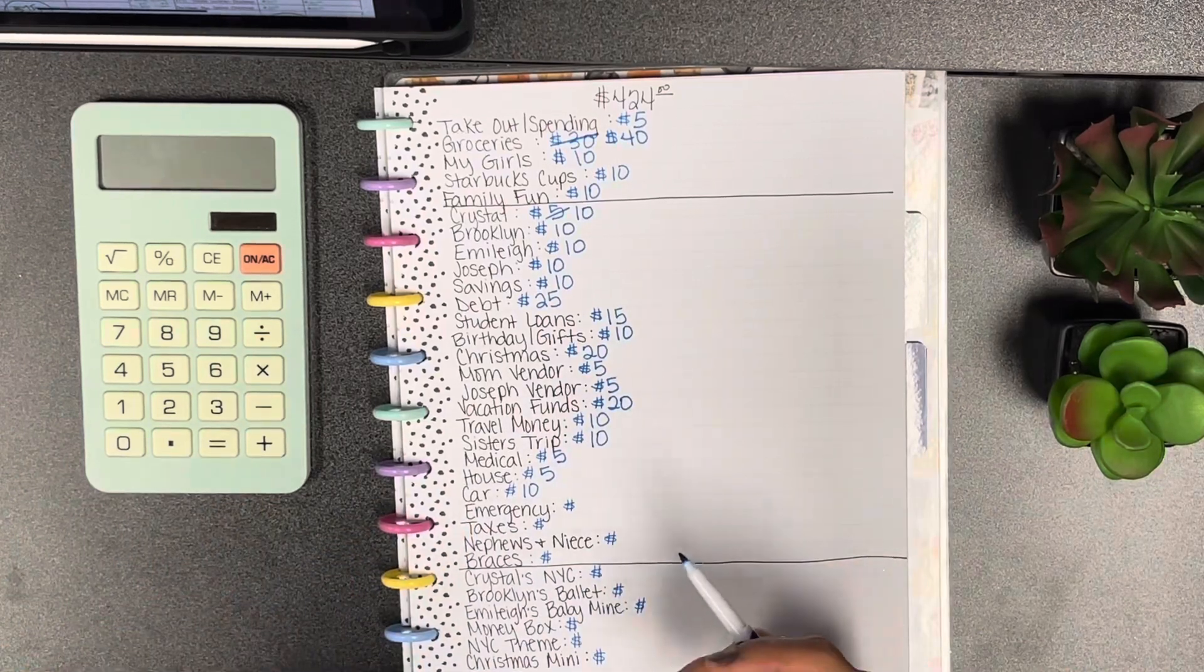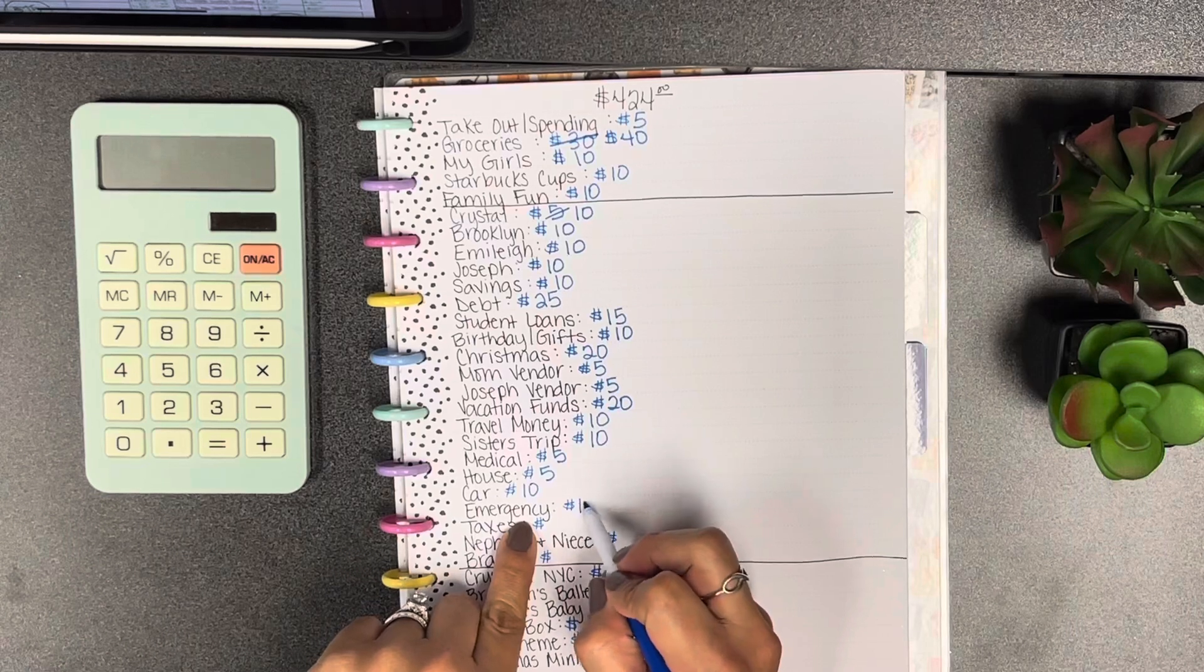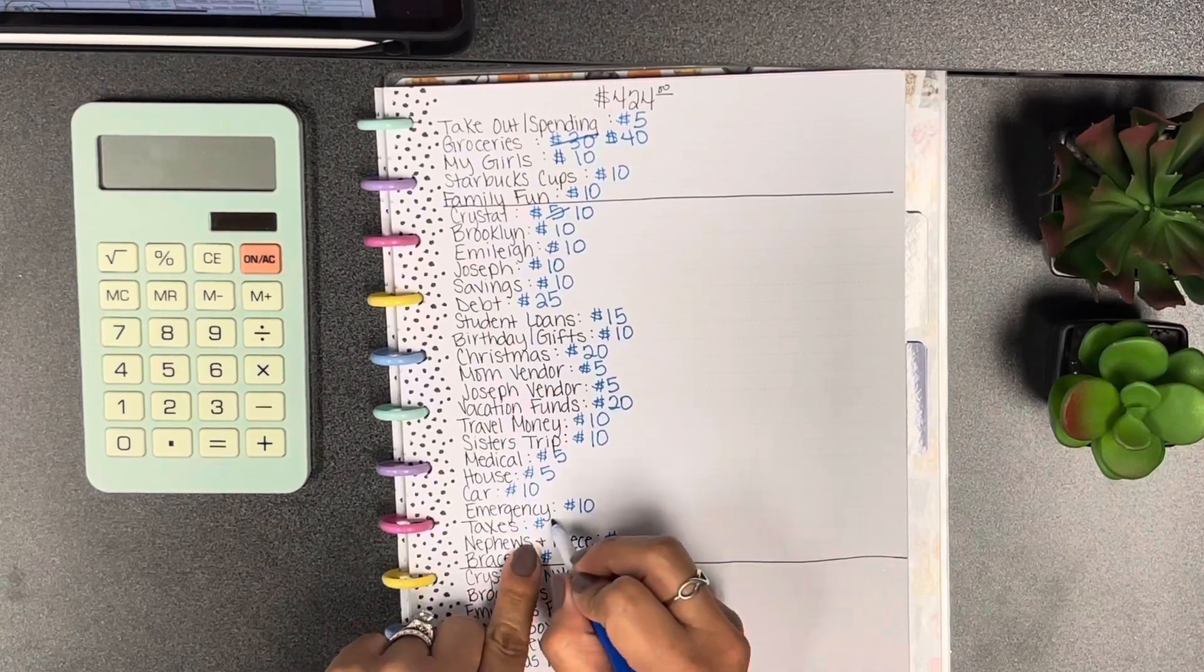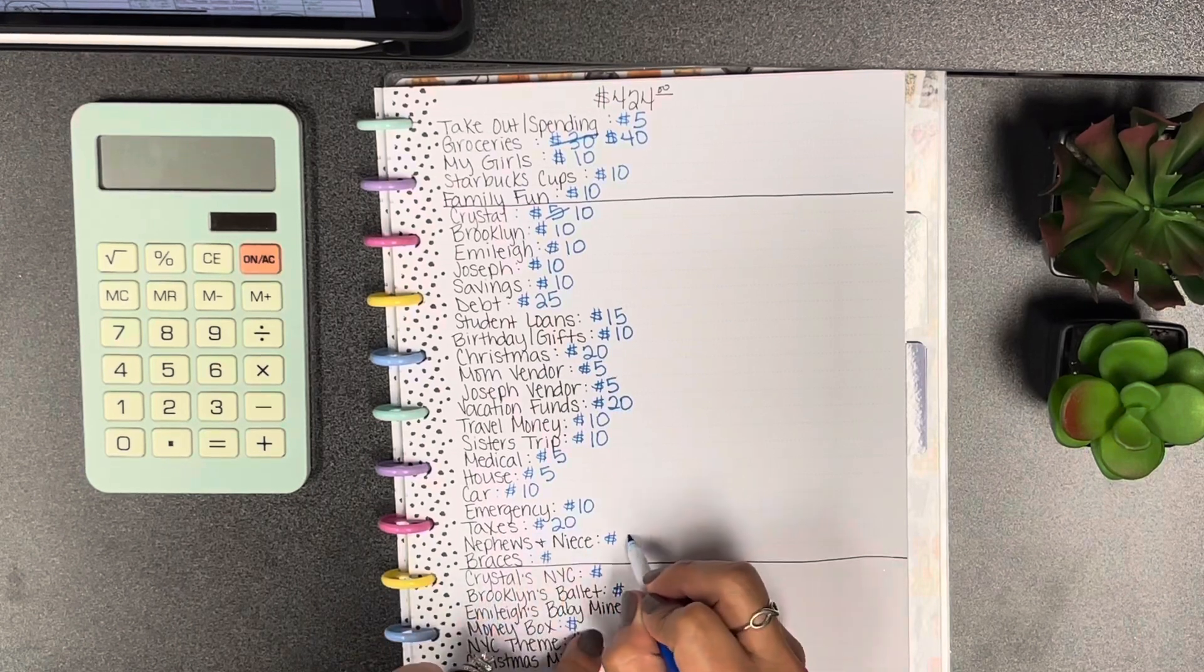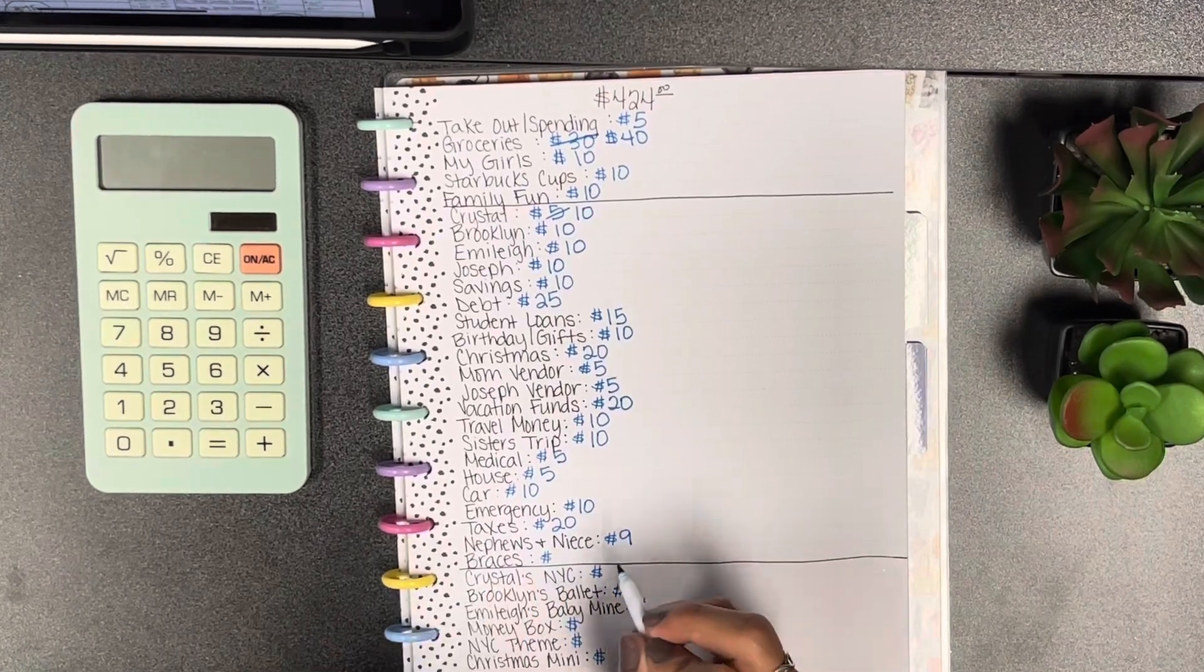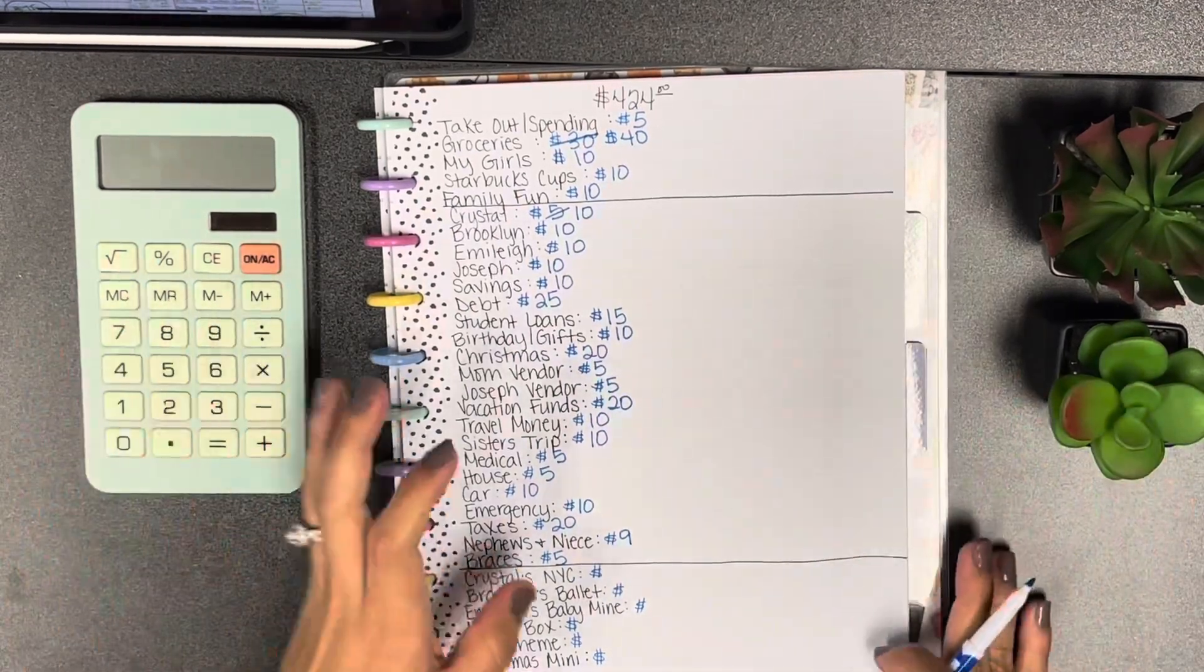Sister's trip we're gonna add 10, medical five, house five, car 10. If you hear coughing in the background that's my daughter trying to get over this cough that she's had. Emergency 10, taxes 20.